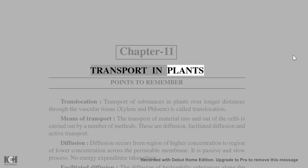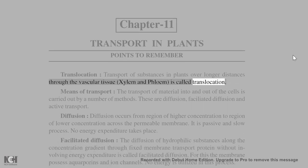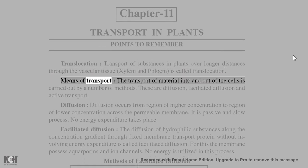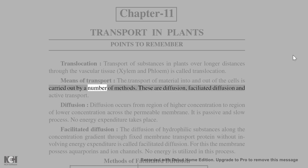Translocation. Chapter 11: Transport in Plants. Points to remember. Translocation, transport of substances in plants over longer distances through the vascular tissue, xylem and phloem, is called translocation. Means of transport: the transport of material into and out of the cells is carried out by a number of methods. These are diffusion,